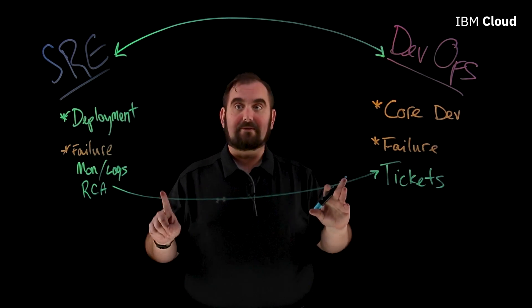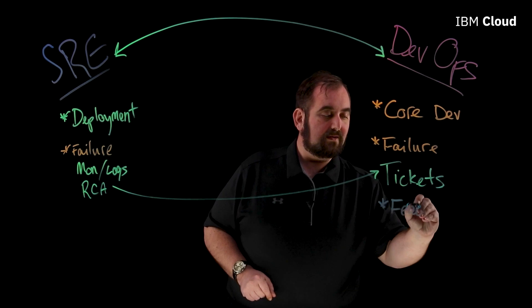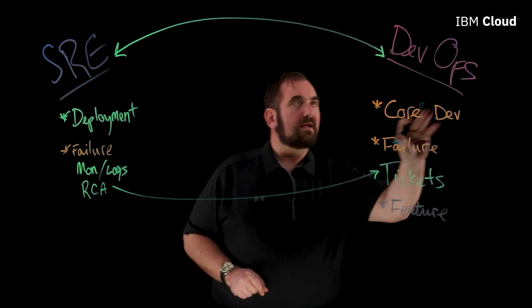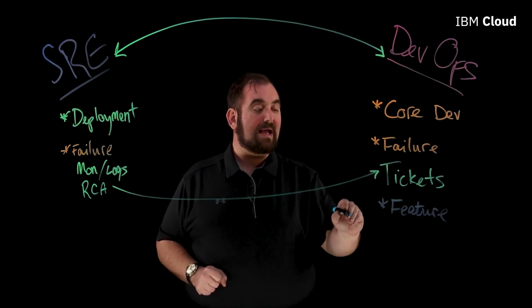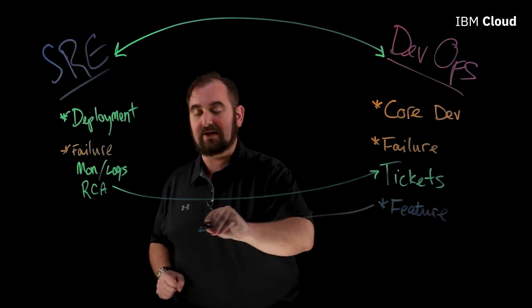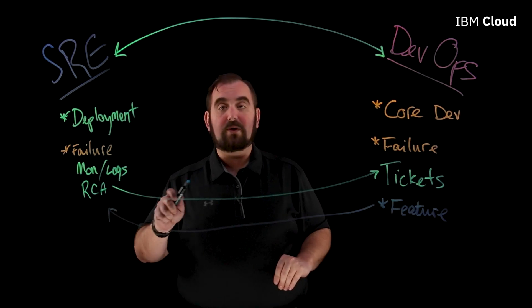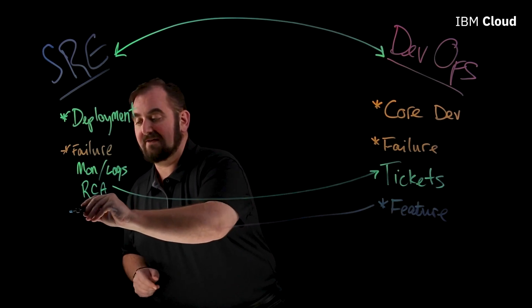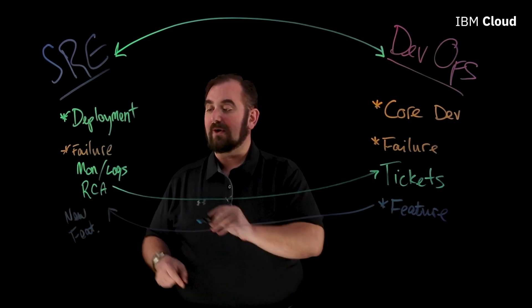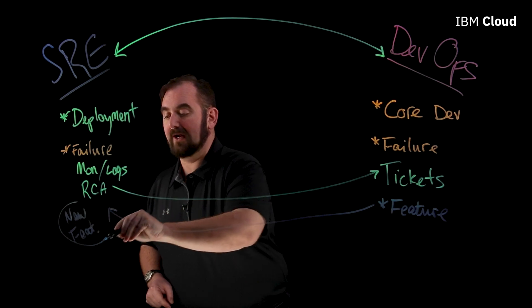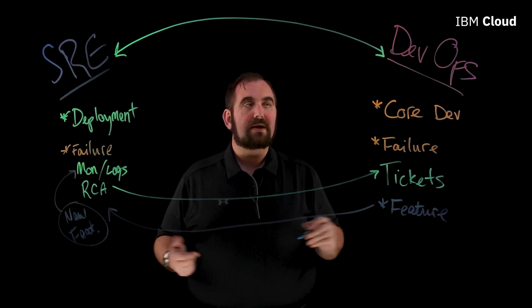Dev is going to implement the fix and get that new feature rolled out, and then they're going to pass that back into SRE and say, hey SRE, that problem that we had — we've got a new feature for you. Our folks on the SRE side then have to take that feature and figure out how to integrate it into their monitoring and logging efforts to make sure that we don't end up in another RCA for the same kind of problem.